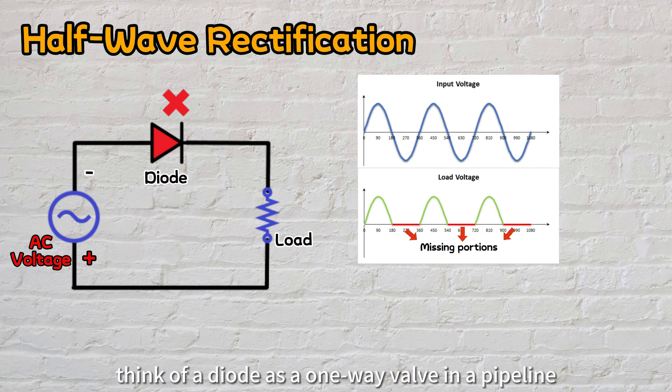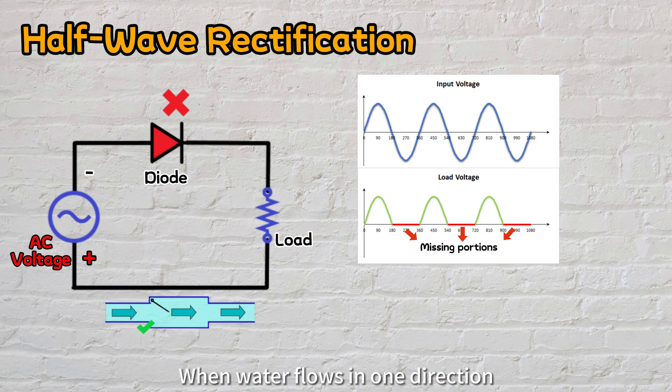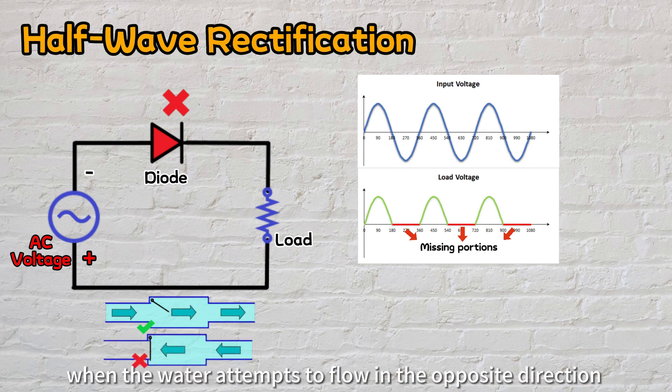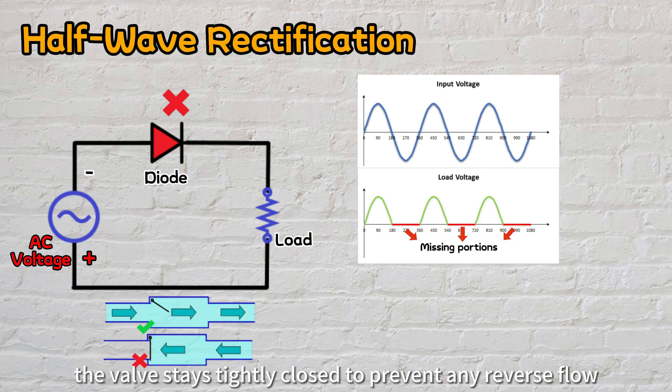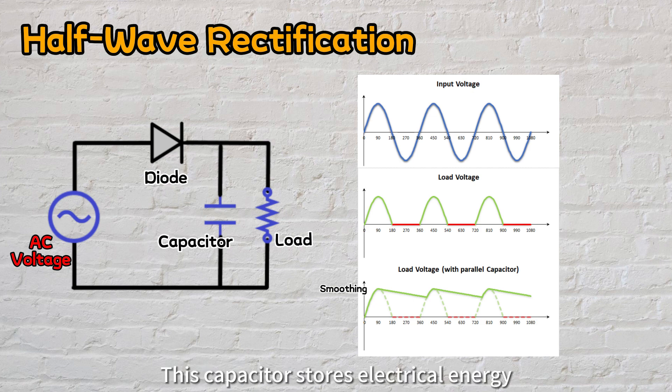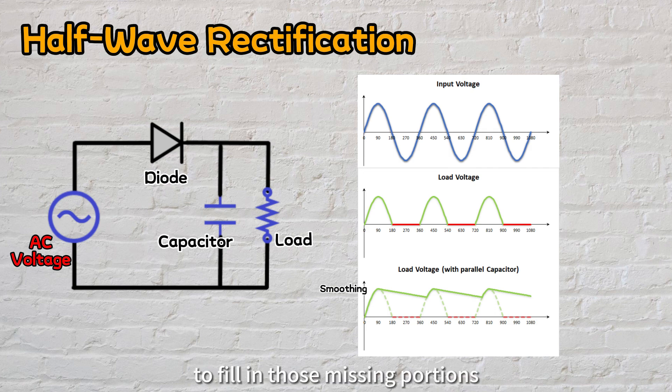For easier understanding, think of a diode as a one-way valve in a pipeline. When water flows in one direction, let's say from left to right, the valve opens up, permitting the water to pass through. However, when the water attempts to flow in the opposite direction, the valve stays tightly closed to prevent any reverse flow. Furthermore, the half-wave rectifier is commonly used together with a capacitor to smoothen the rectified DC output. This capacitor stores electrical energy and releases it when needed to fill in those missing portions.